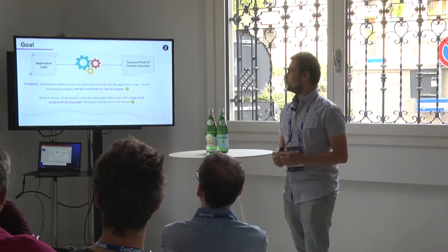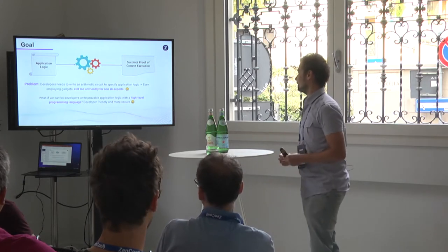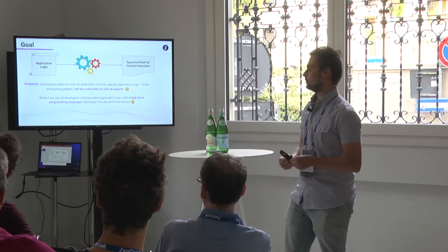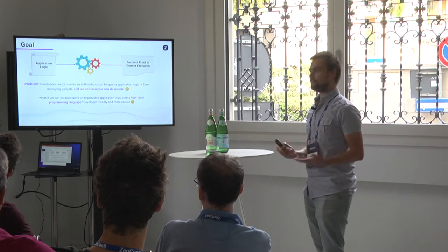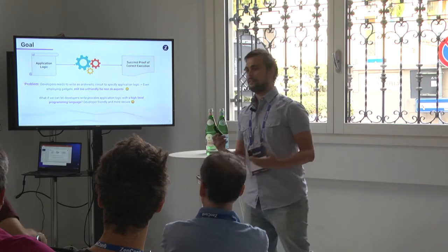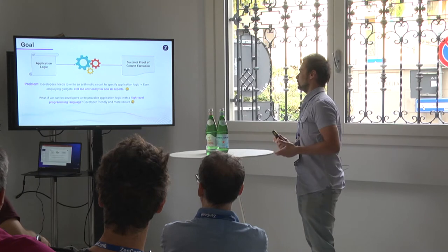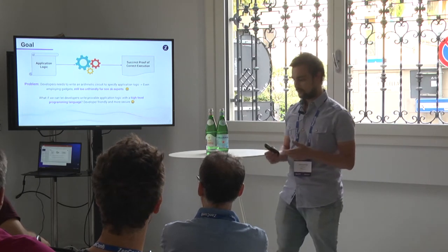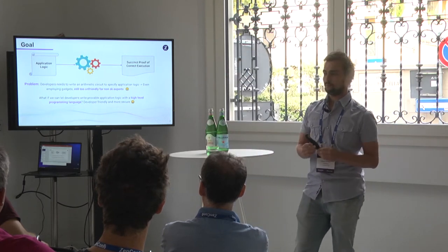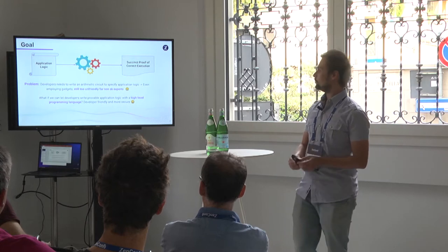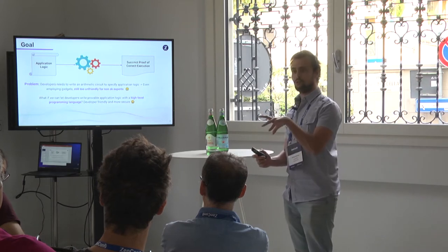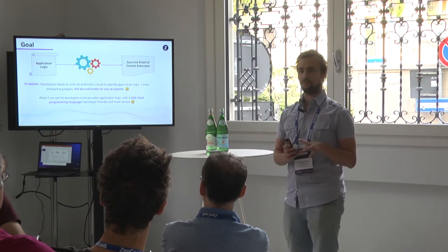So let's start from the goal — why do we need these solutions? The idea is that we need to write provable application logic, meaning we want to be able to generate a succinct proof of correct execution of an application. Correct execution is the computational integrity statement: we want to be sure that the output of the computation was computed correctly from the input.